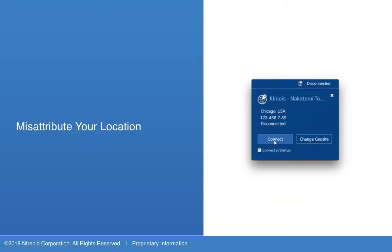Conducting your cyber operations with your organization's attributed IP location is a mission-critical risk. Infusion's GeoSite Control menu allows you to manage and mask your location, either by leveraging our worldwide network of geo sites or by using a dedicated point of presence. Our different connection methods allow you to choose the digital fingerprint you want your target to see.